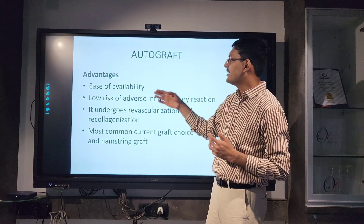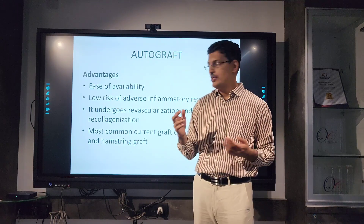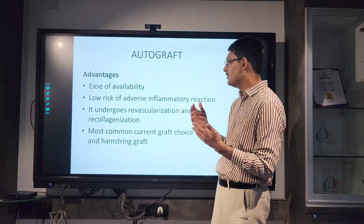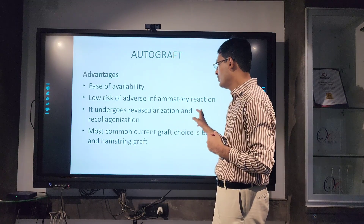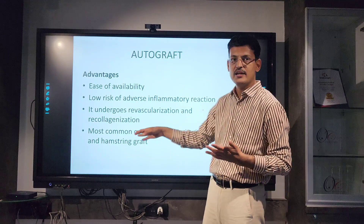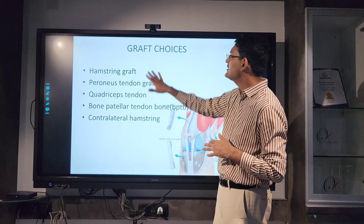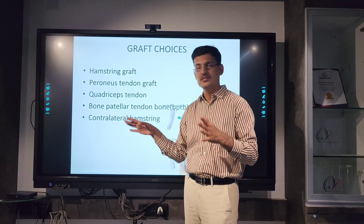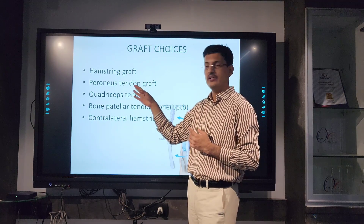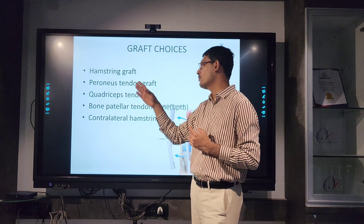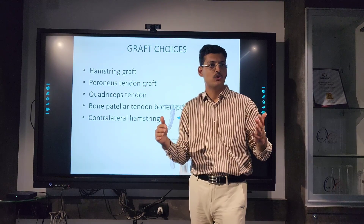The autograft advantage is ease of availability, low adverse inflammatory reaction because it is the body's own tissue, and it can revascularize and recolonize very fast. The most common graft we use is a hamstring graft. The sequence we use nowadays is: hamstring graft first, followed by peroneus tendon, then quadriceps, then BTB, then contralateral hamstring — depending on whether it is a single ligament, multiligament, or poly-ligament case.